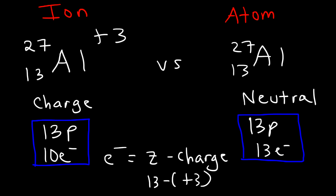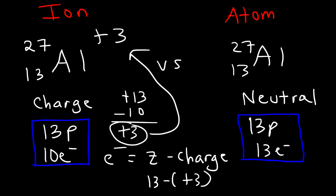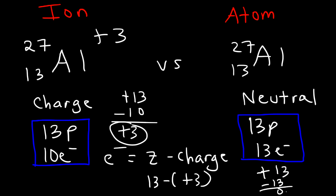Every proton has a +1 charge and every electron has a −1 charge. For the ion, you have a charge of +13 in the nucleus and −10 in the electron cloud. Adding those gives the net charge of the ion. For the atom, 13 protons give +13 and 13 electrons give −13, so the net charge is 0 — that's why the atom is electrically neutral.